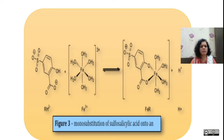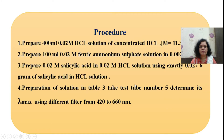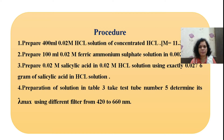Here the structure of salicylic acid and Fe forming a complex is shown. For this experiment you need to prepare 400 ml of 0.02 molar HCl solution — that is the amount required throughout the experiment. Do the theoretical calculation of how much to take from the concentrated solution to prepare this 400 ml, 0.02 molar HCl solution.